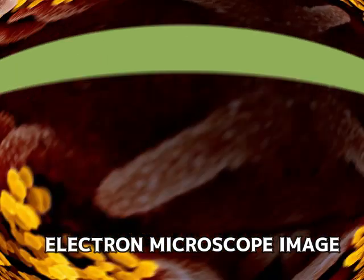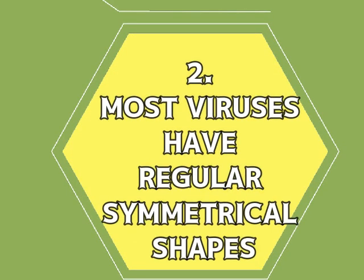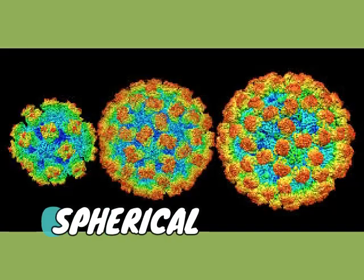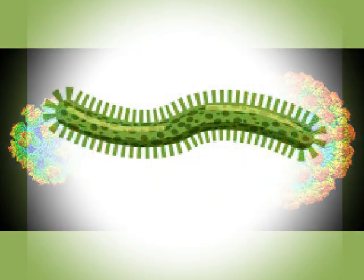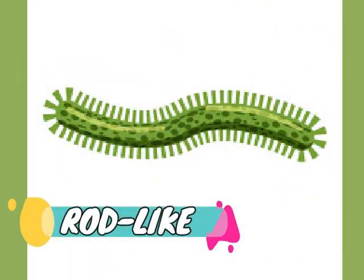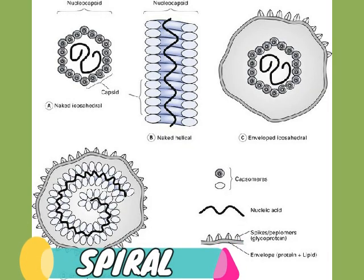Number two: most viruses have regular symmetrical shapes. Some are spherical, some are rod-like, some are spiral, and some even have tails.